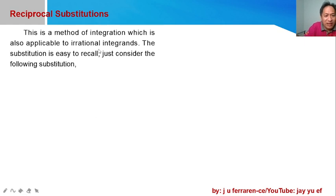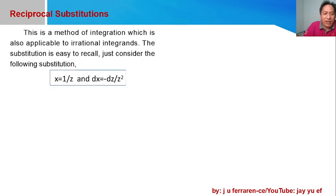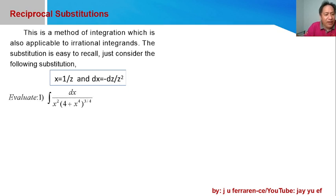which is applicable to irrational integrands. The substitution is easy to recall — just consider the following substitution where x, if the variable of integration is x, can be replaced with the reciprocal of z, or 1 over z. The differential dx is equal to the negative of dz over z squared.